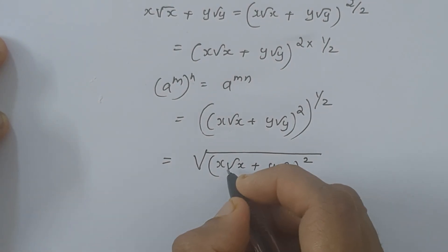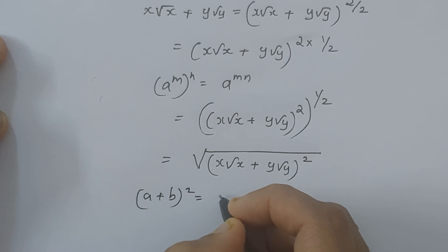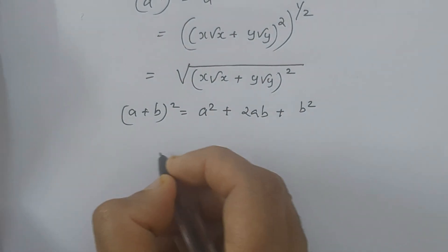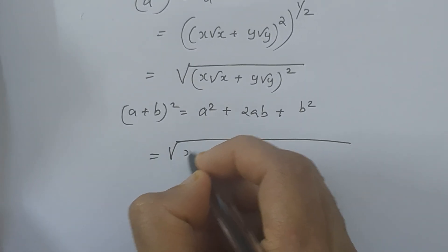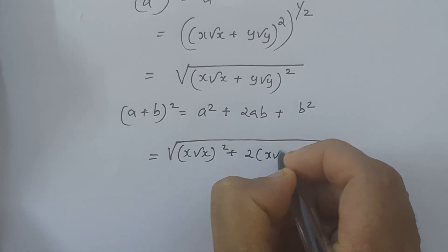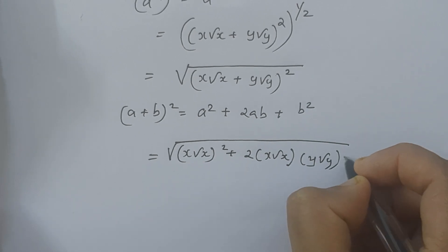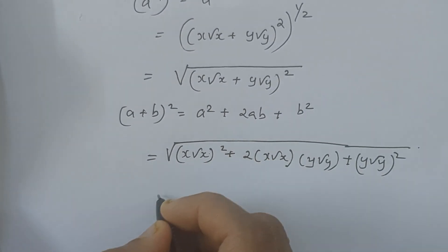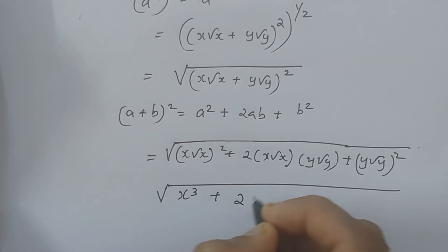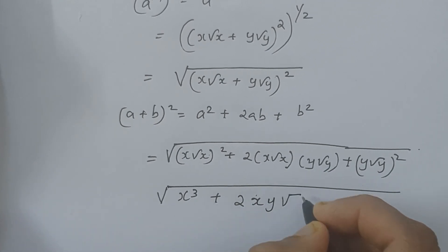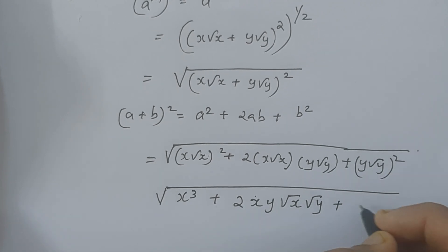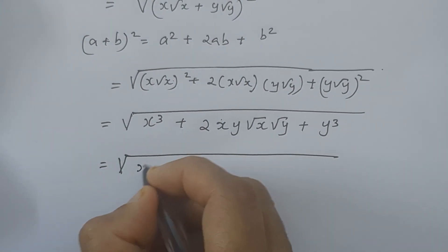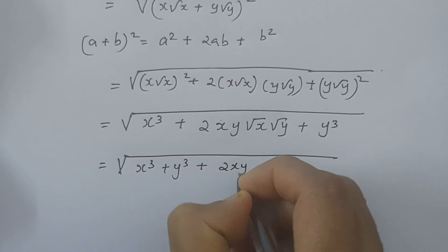We know (a + b) all squared equals a squared plus 2ab plus b squared. Applying this, we get the square root of (x√x)² plus 2 times x√x times y√y plus (y√y)², which simplifies to the square root of x³ plus y³ plus 2xy√xy.